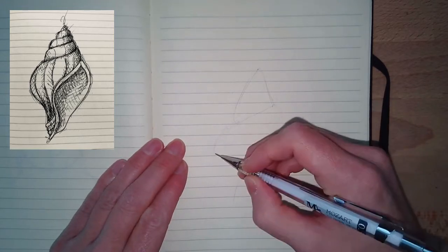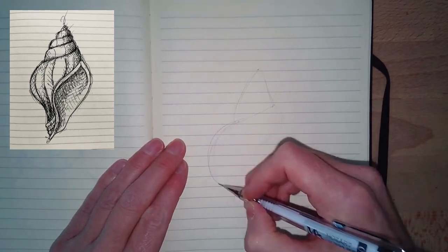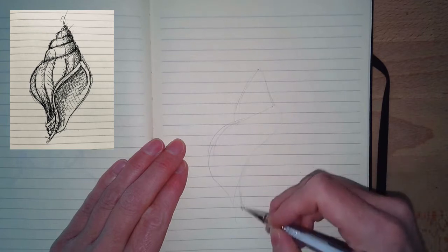We're going to start with that top section, and then we're going to go to the width of the body. I draw really light because there's going to be a lot of erasing and adjusting.